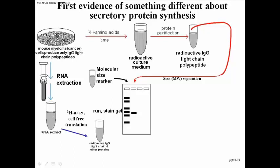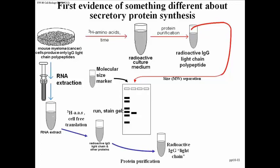This tube should now contain radioactive IgG light chain and perhaps a few other proteins produced from different messenger RNAs present when the RNA was extracted. We then purify the IgG from any other proteins produced, doing a micro-scale purification. The result is a preparation of reasonably pure radioactive IgG light chain polypeptides made by in vitro cell-free translation. We load that material into the third lane of the gel, which already contains markers and radioactive IgG light chain made by living cells.